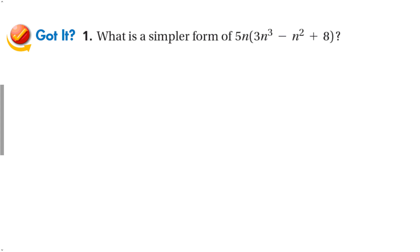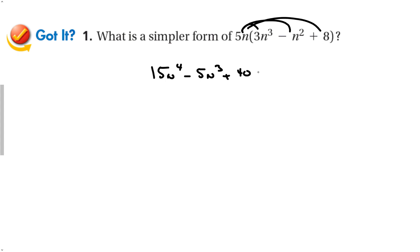Let's try the guided problem. Distribute: multiply 5n times all three things inside the parentheses. That gives 15n to the 4th minus 5n to the 3rd plus 40n. We've distributed this term to all three of the terms inside.